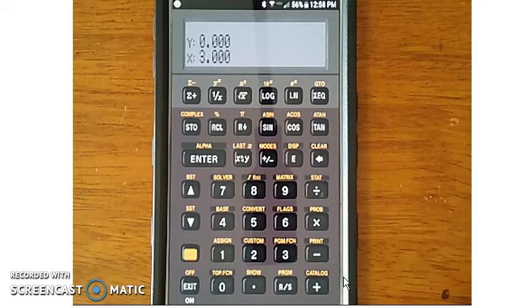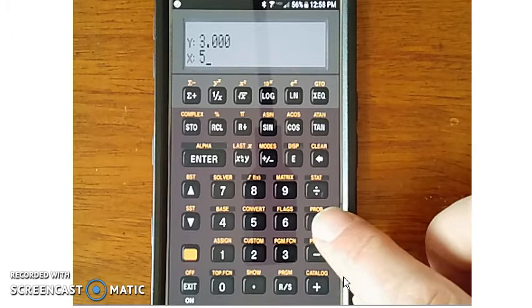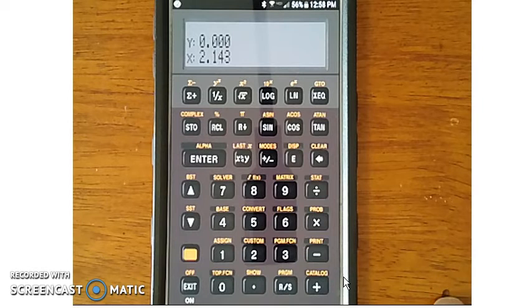To multiply by 5, hit the number 5. It automatically pushes the 3 onto the Y stack. X is now 5. I can now multiply 3 times 5. Divide by 7. So you can add, subtract, multiply, divide with HP calculators, just like a TI.